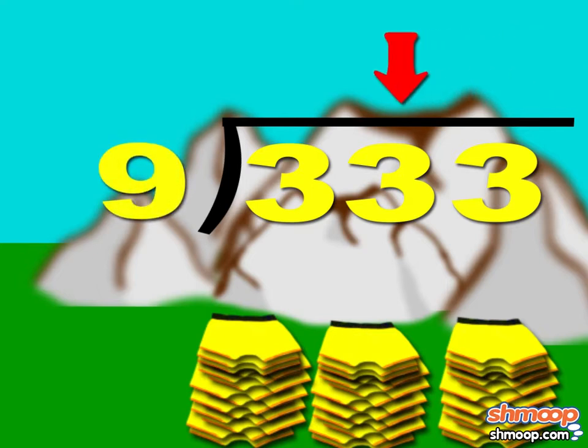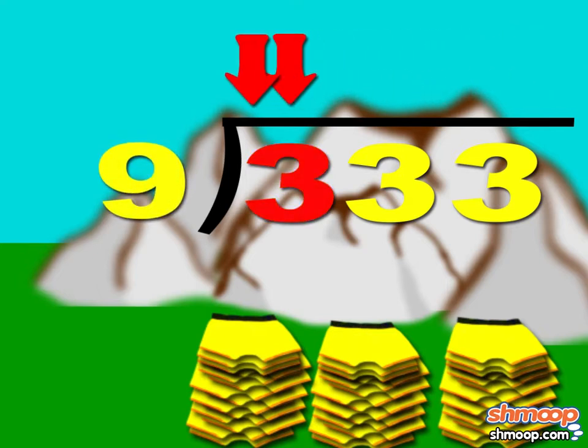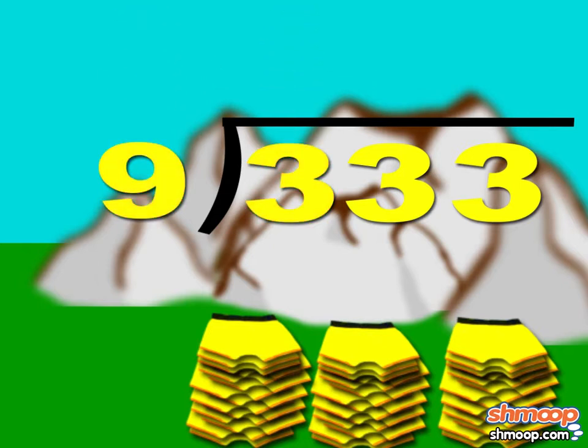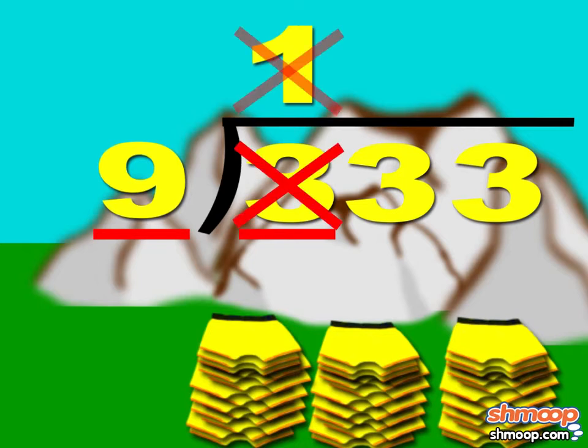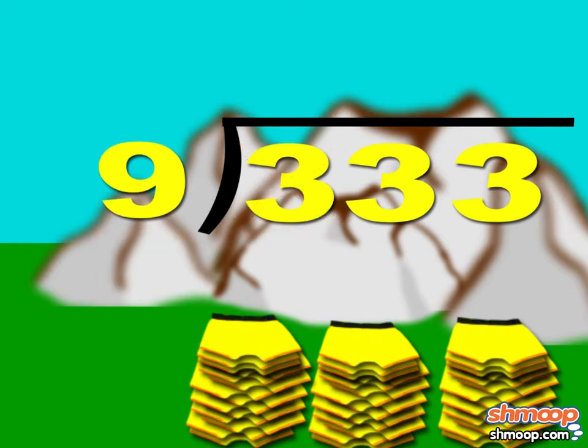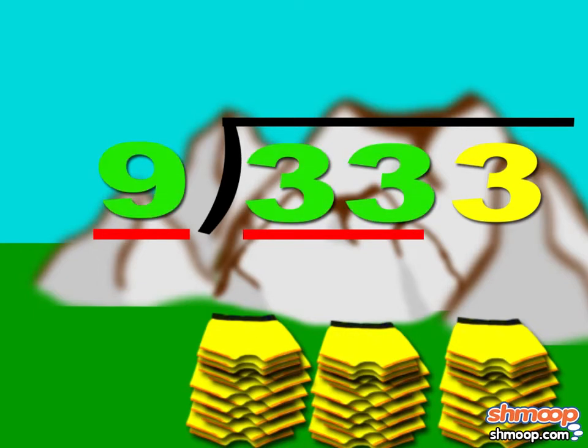Next, decide if the first digit of the dividend can be divided by the divisor. Or, if nine can go into three at least once. No? No? So, now see if nine will go into the first two digits, or 33. Yes, it can.